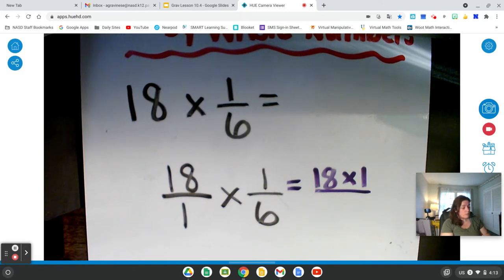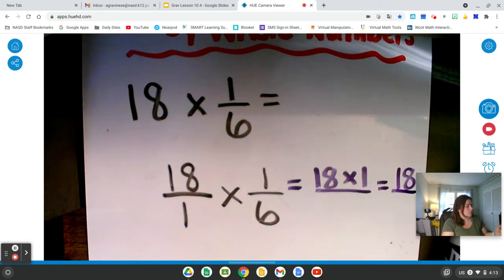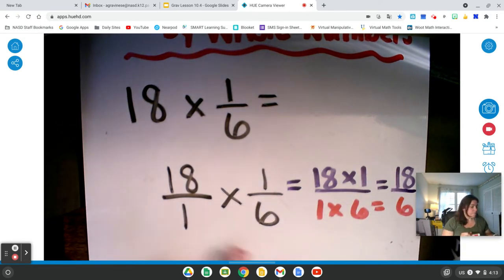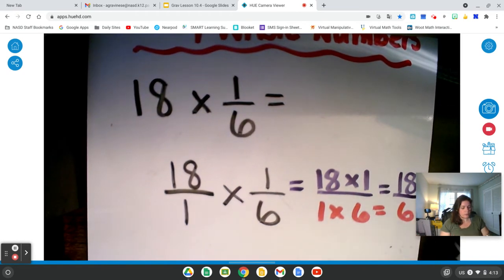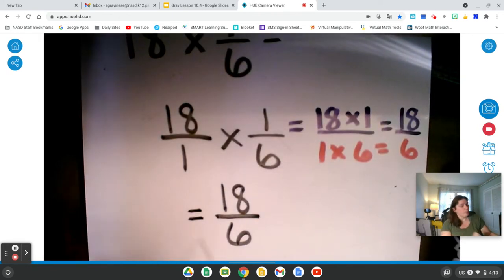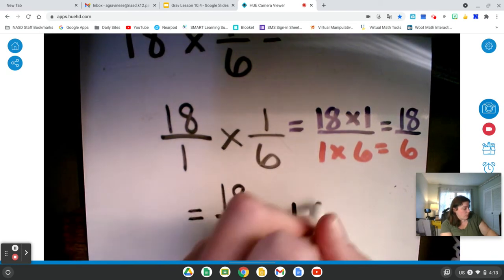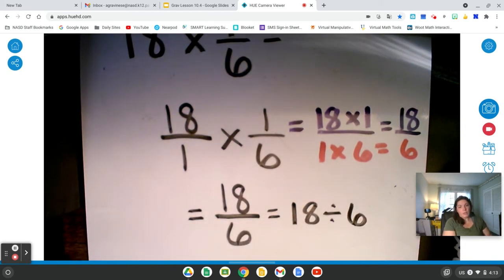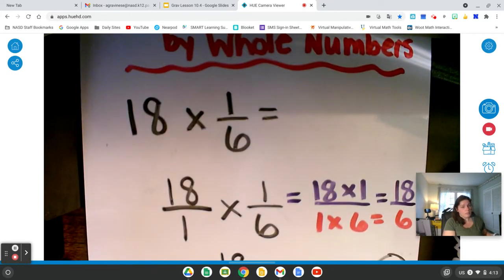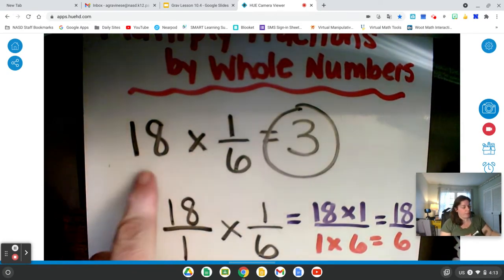18 times 1 equals 18. That's our numerator. And then we multiply our denominators. 1 times 6, and 1 times 6 equals 6. So we get 18 over 6. Now, of course, we want to make sure our answer is always in simplest form. Remember that fractions are division problems. So 18 over 6 is the same thing as saying 18 divided by 6. And 18 divided by 6 equals 3. So 18 times 1 sixth equals 3. We can also think of that as 1 sixth of 18 is 3.